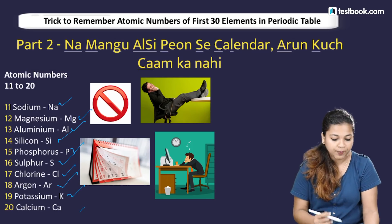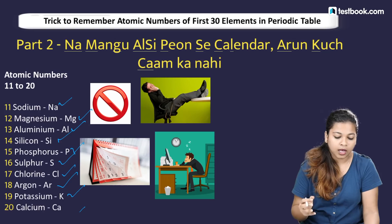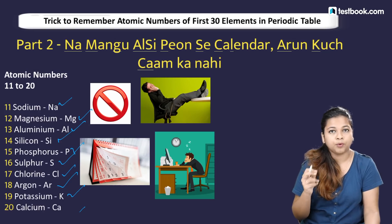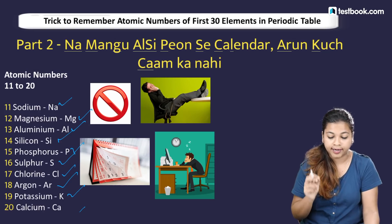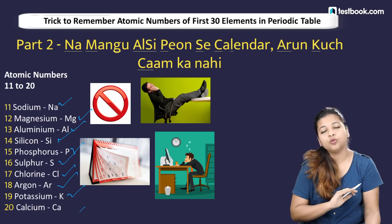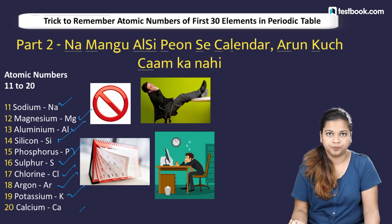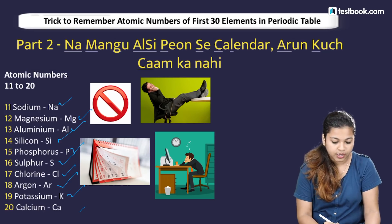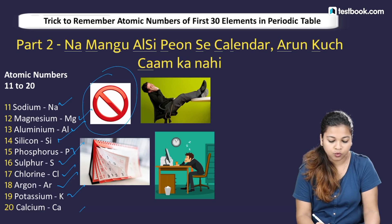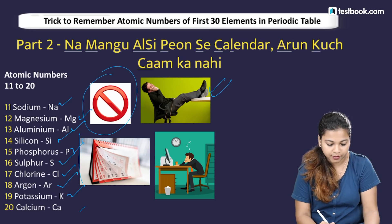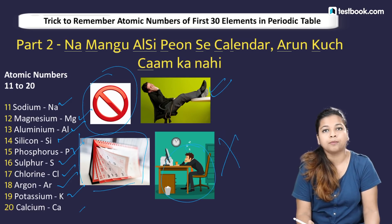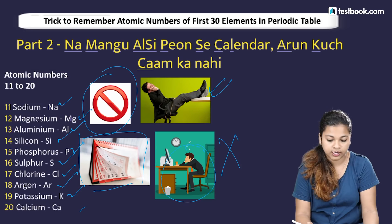The mnemonic sentence for elements 11 to 20 is: 'Na maangu, Al-Si, pyoon se, calendar, Arun kuch kaam ka nahi.' This sentence helps us remember sodium, magnesium, aluminium, silicon, phosphorus, sulfur, chlorine, argon, potassium, and calcium in order.